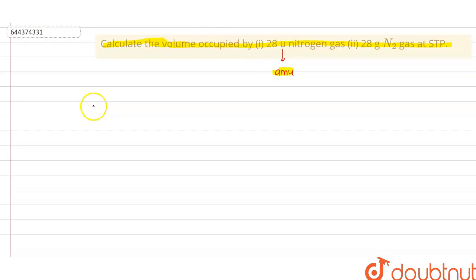First of all, we have to know what is that u or you can say amu. So one amu is defined as the average mass of proton and mass of neutron, which is equal to 1.66 × 10^-24 gram.